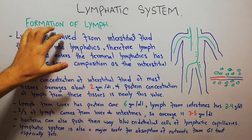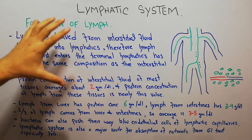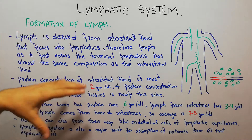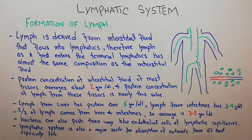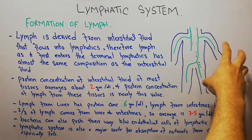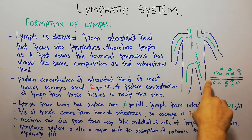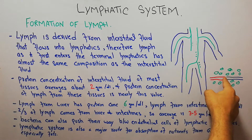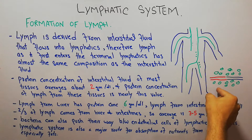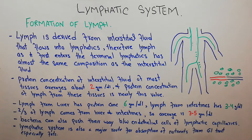Today we are going to discuss the formation of lymph. We assume that you have watched our previous lectures in which we discussed that blood is pumped from the heart through the aorta into the large arteries and finally into the capillaries. At the arterial side of the capillaries, plasma or fluid from the blood goes out, and on the venous side of the capillaries the fluid gets absorbed.